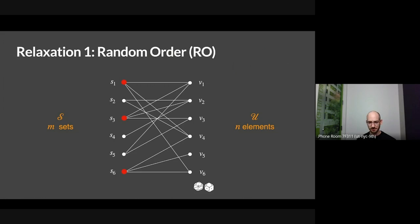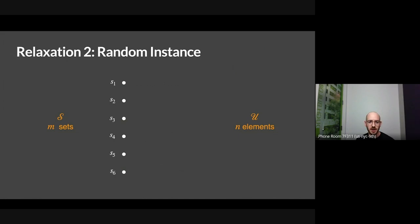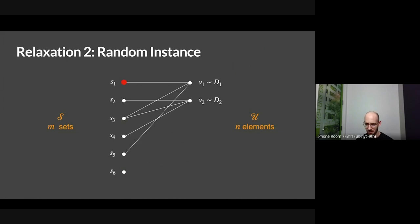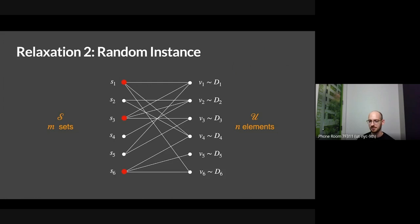Here's a different relaxation. In the last one, the order was random. You might wonder: is there a way to make the instance itself random? Perhaps the order is now still fixed and adversarial, but the structure of the graph itself is generated randomly. I have distributions d1 through dn, and the vertices I see are drawn successively from these distributions — so v1 is drawn from d1, v2 from d2, and so on.